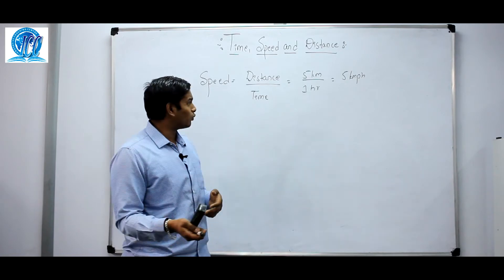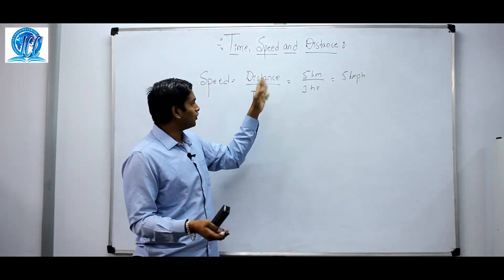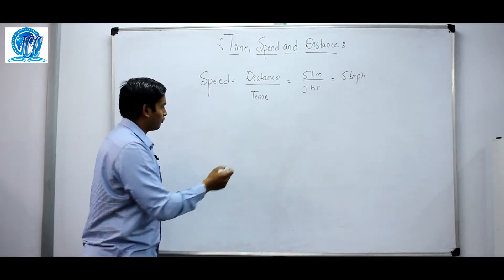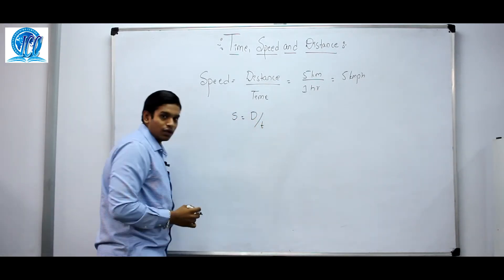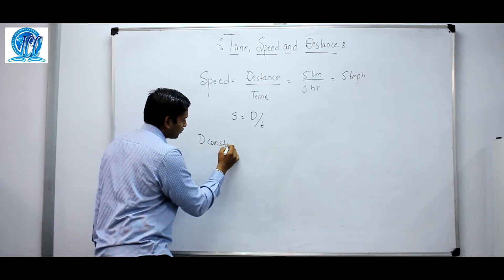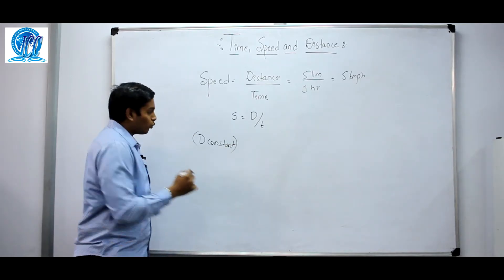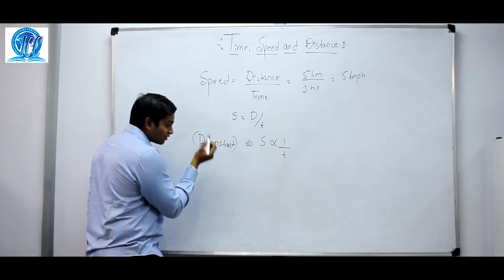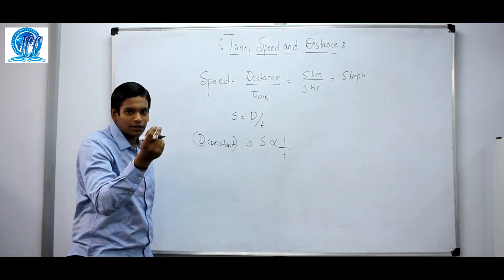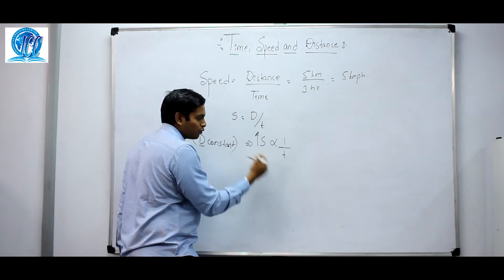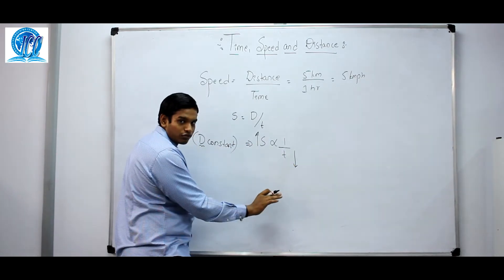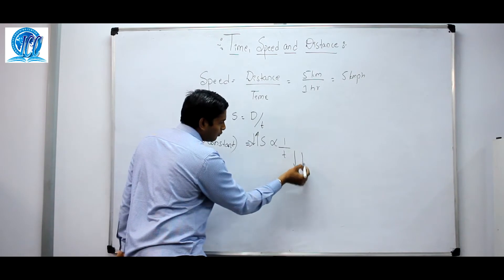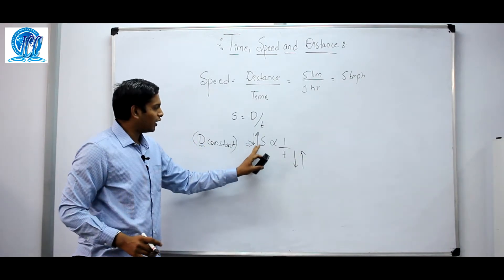Speed is defined as the distance covered in a unit of time — it is the ratio of distance covered to time taken. Now in the formula S = D/T, if D is constant, speed is inversely proportional to T. That means if you travel at a high speed, you cover the same distance in less time. If you travel at a lesser speed, you cover the same distance in more time.